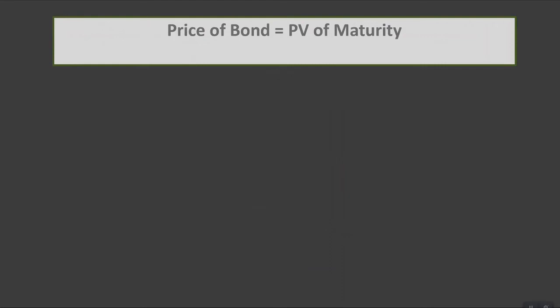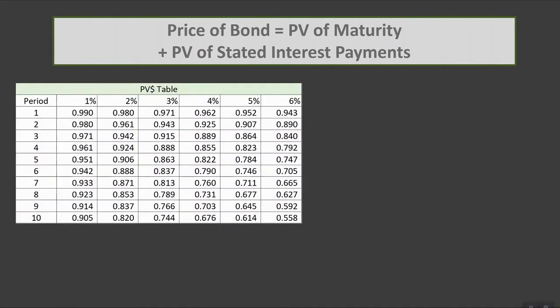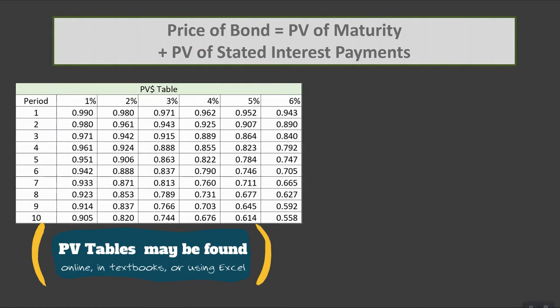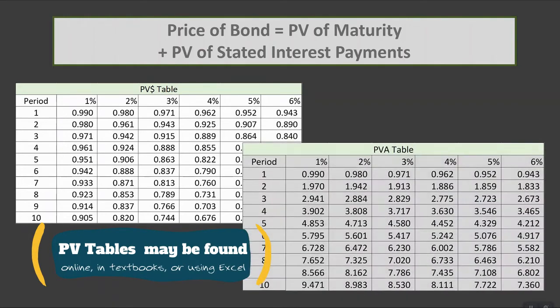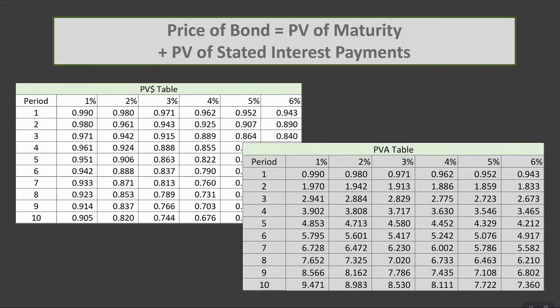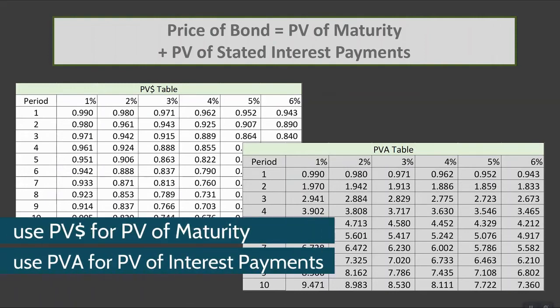Pricing of the bond equals the present value of the maturity amount — generally the thousand dollars — plus the present value of stated interest payments. To figure out our premium or discount, we need to determine the present value of the maturity and the stated interest payments, so we would need to pull present value tables. The present value of the maturity value is determined using the present value of a dollar table, and stated interest payments — because these are annuity payments made over the life of the bond — will be determined using the present value of an annuity table.